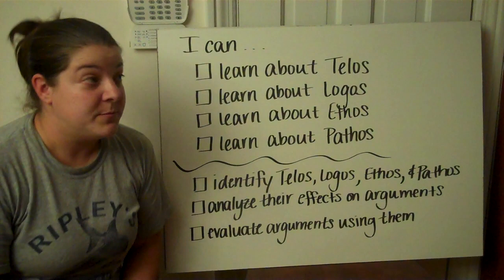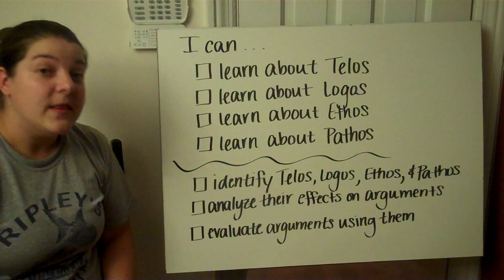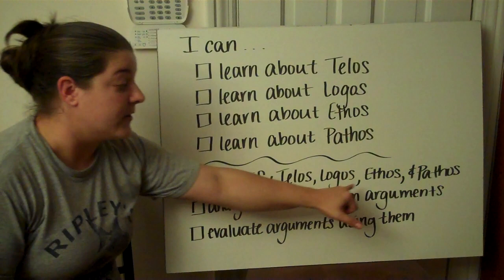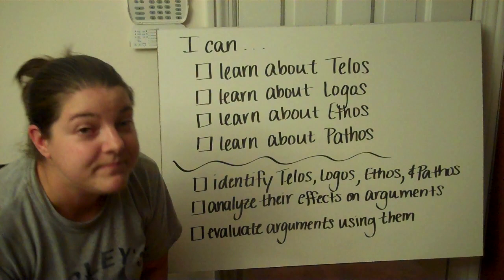Today's objectives are: 1. I can learn about Telos, 2. I can learn about Logos, 3. I can learn about Ethos, and 4. I can learn about Pathos. Those objectives will eventually move us to where we can identify Telos, Logos, Ethos, and Pathos, analyze their effects on arguments, and evaluate arguments using them. All of those we'll do in class — that's why they're under this squiggly line.